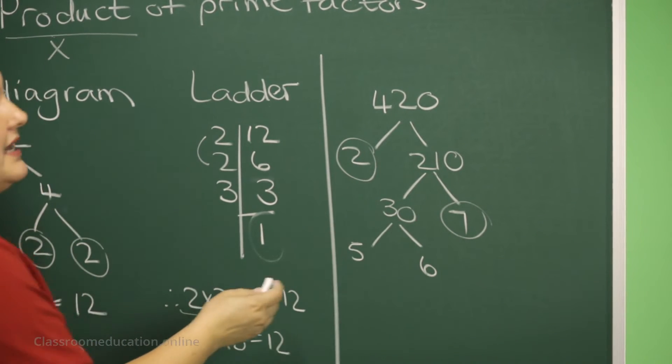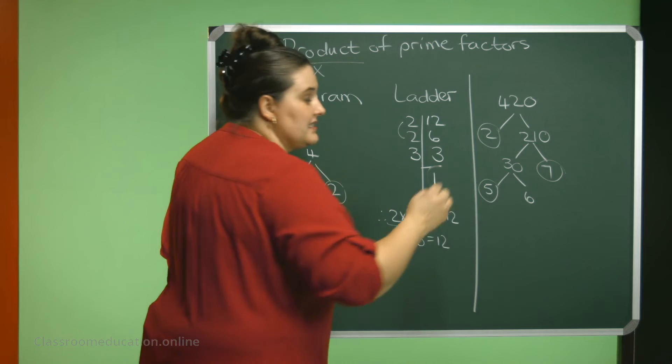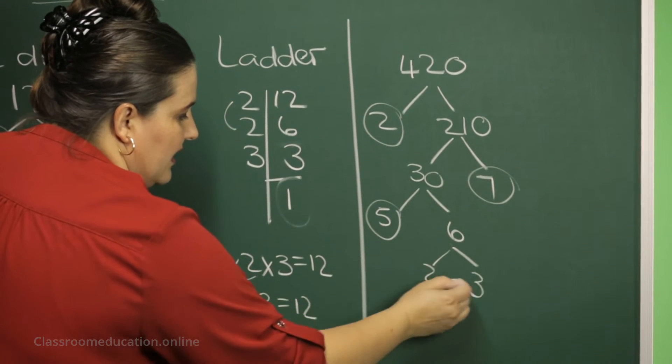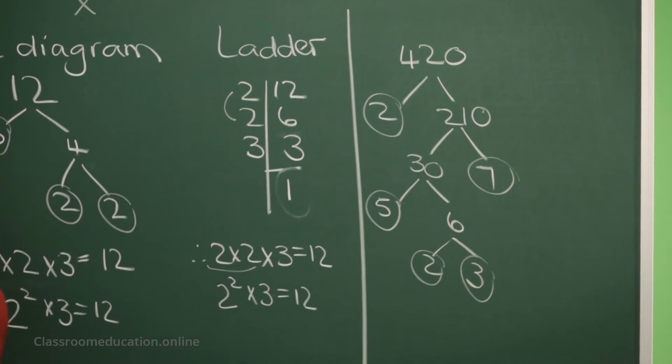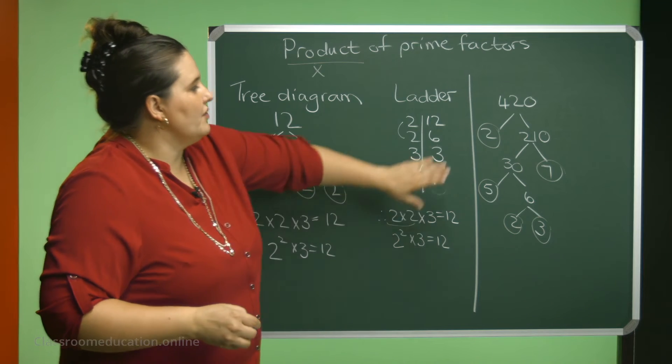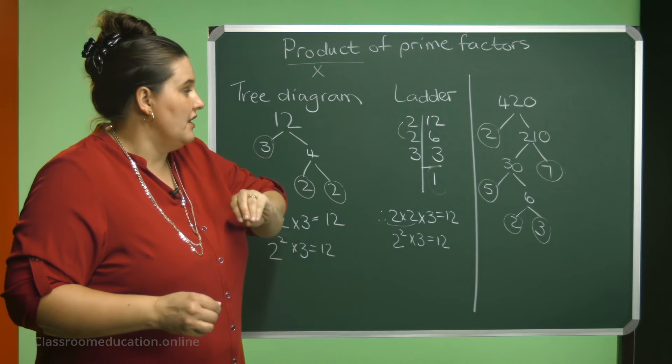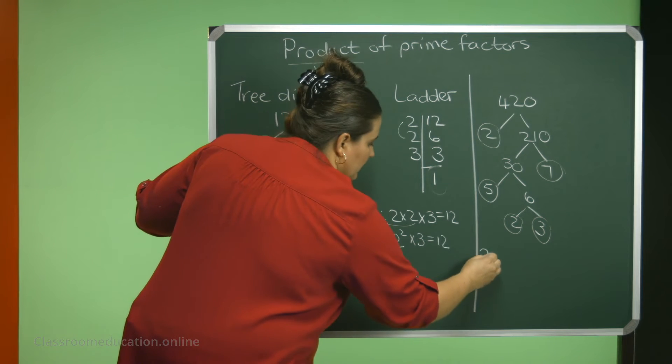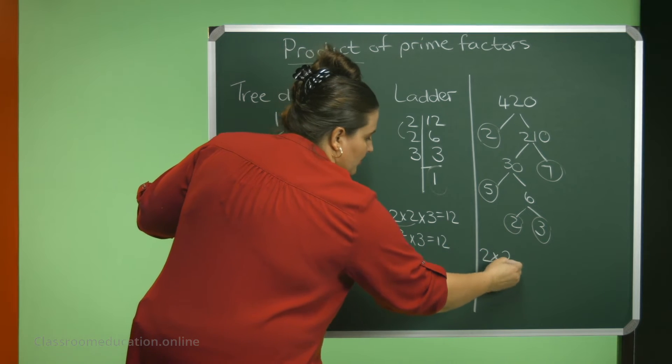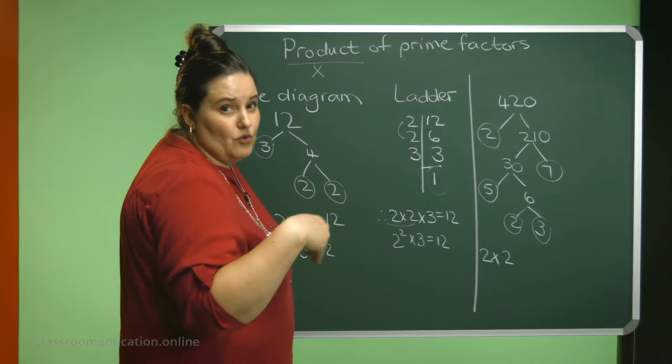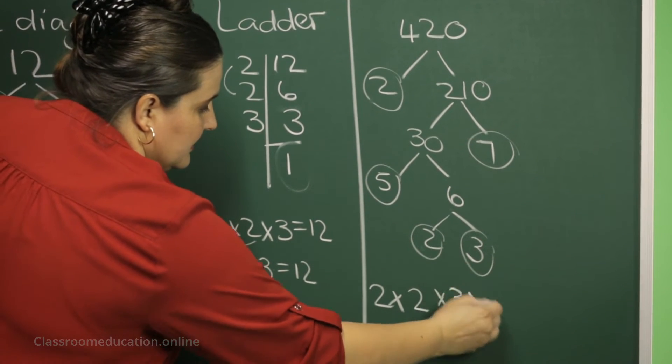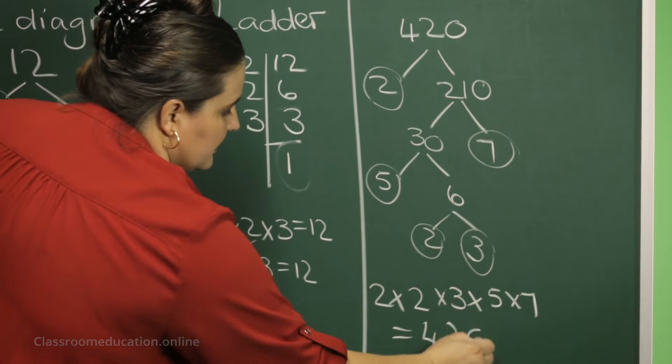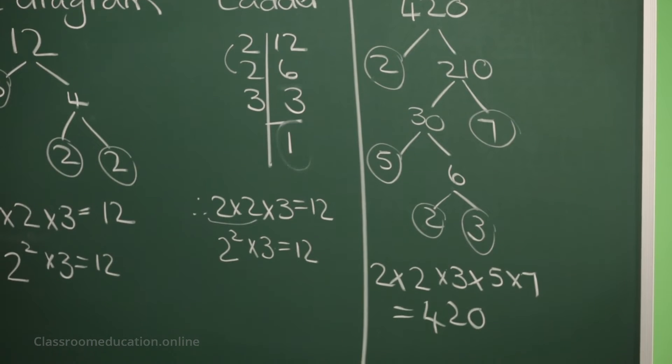5 times 6? Is 5 a prime number? Yes. Is 6 a prime number? No. But how about 2 times 3? The 2 is a prime number as well as the 3. Now, to write 420 in terms of a product of prime factors, I can say 2 times 2. I like for it to be from small to big. Times 3, times 5, times 7 will give me an answer of 420.